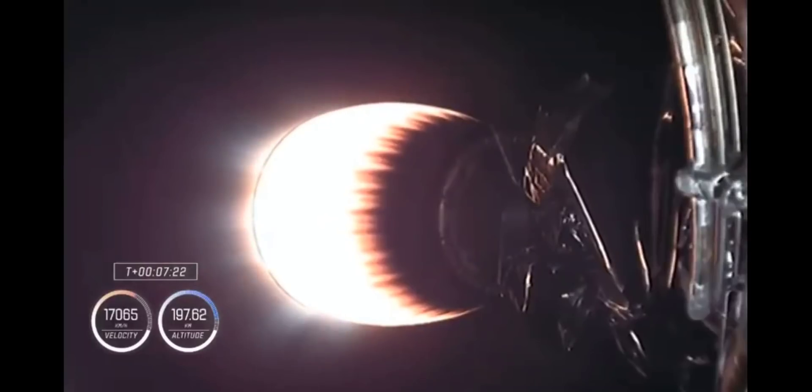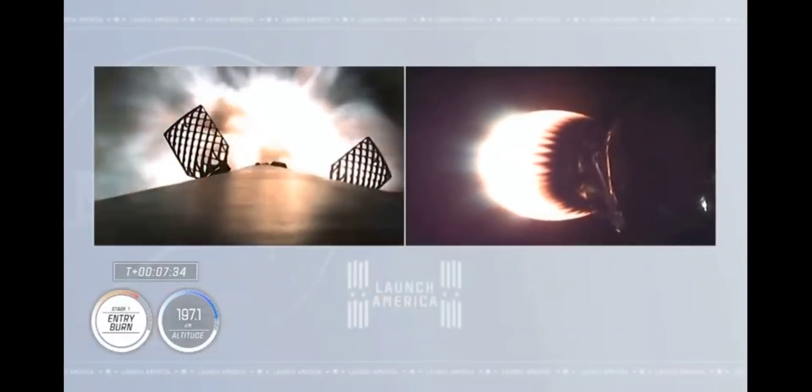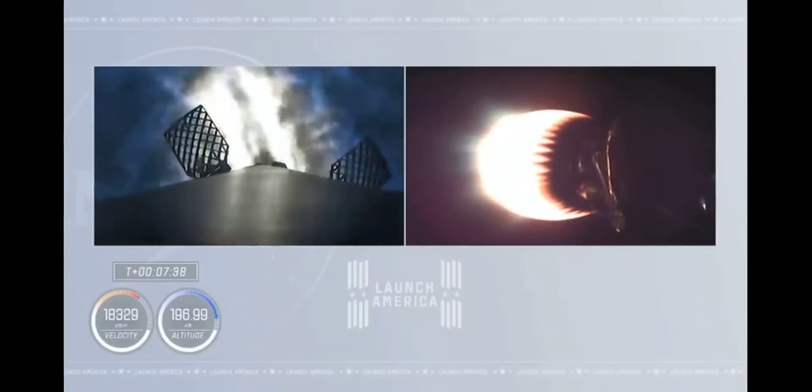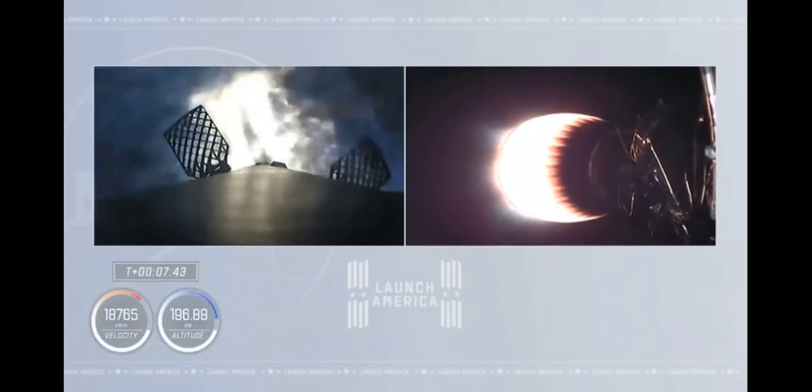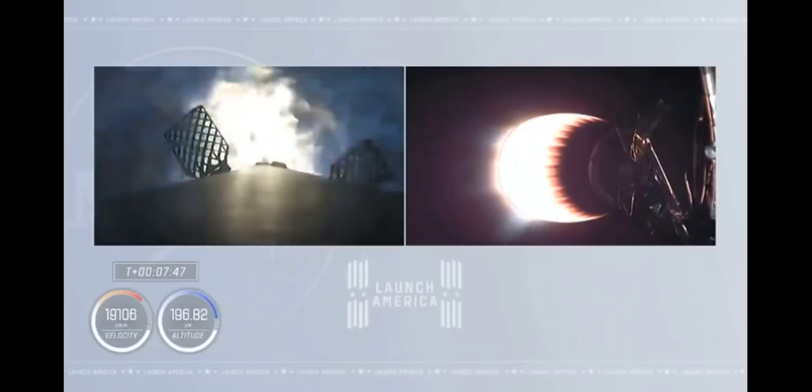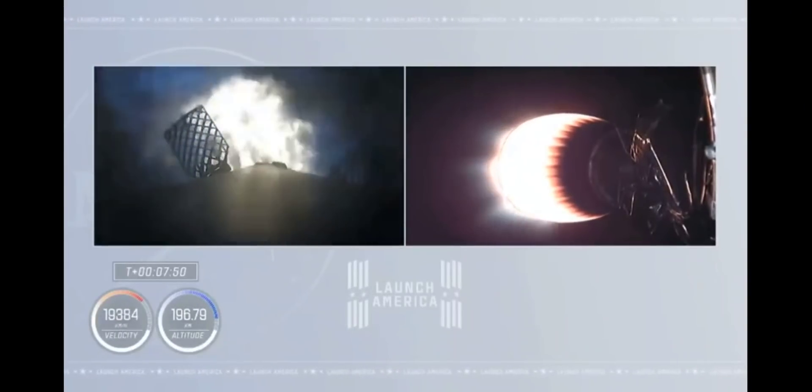Right now on stage two, the crew is getting about a little more than two and a half G's of acceleration. First stage preparing to ignite for the entry burn. Stage two FTS has saved. And we've got ignition of the entry burn, center engine, followed by the other two restart engines.